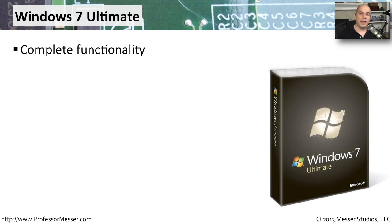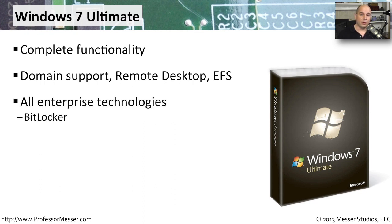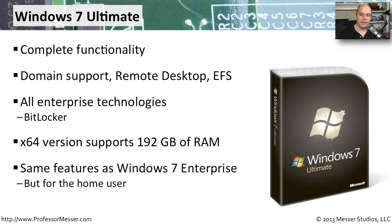If you wanted Windows 7 with every feature enabled, you were probably running Windows 7 Ultimate. This allowed you to connect to Active Directory, use it as a remote desktop server, encrypt individual files using EFS, or encrypt the entire hard drive using BitLocker. The 64-bit version of Windows 7 Ultimate supported up to 192 gigabytes of memory. This was exactly the same functionality as Windows 7 Enterprise, essentially giving home users access to enterprise-level capabilities.